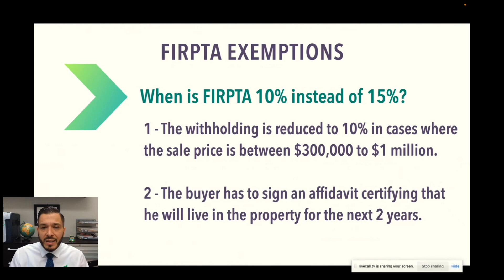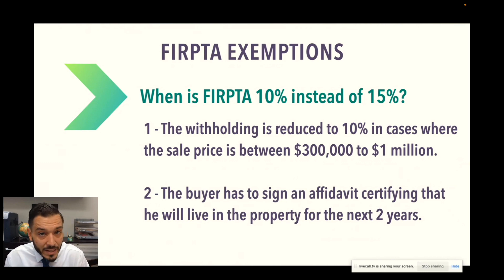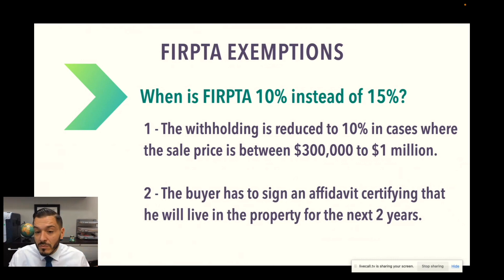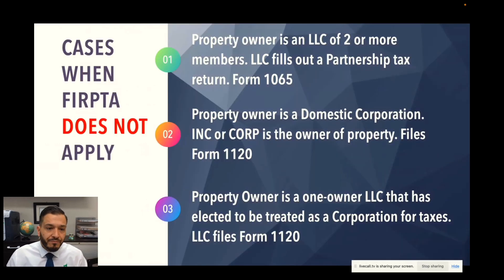This next case is not so much a full exception, but there are situations where the standard 15% withholding of the gross sales price can be automatically reduced to 10%. FIRPTA still applies, but we can reduce it by a significant amount. When the sales price is over $300,000 and up to a million dollars, the FIRPTA withholding is reduced to 10%, as long as the buyer intends to live in the house and signs an affidavit stating as such.